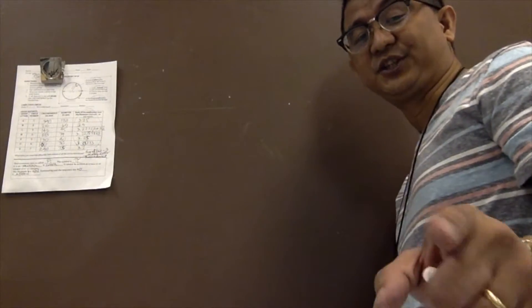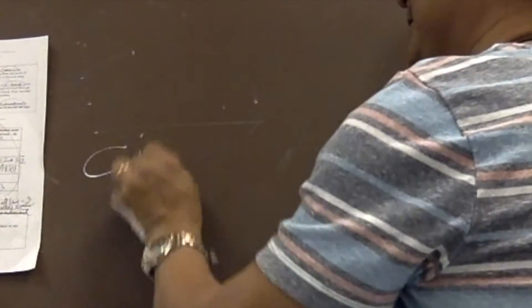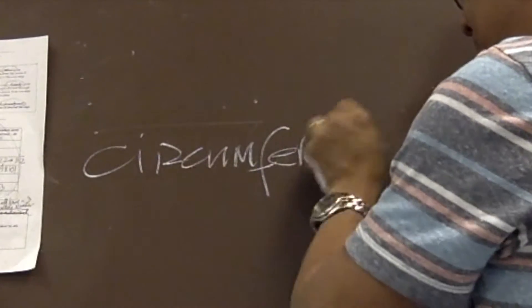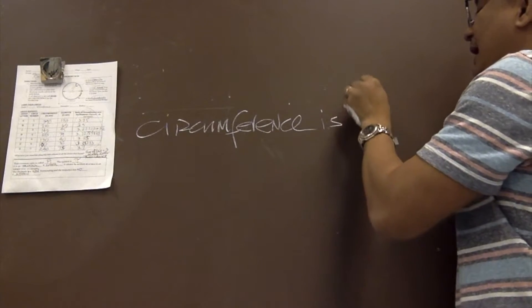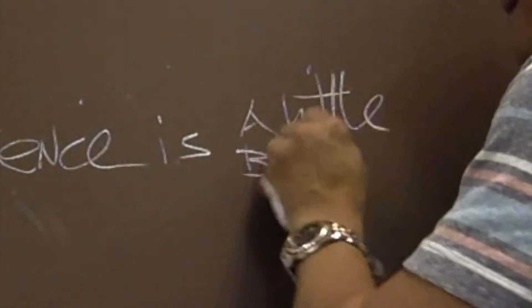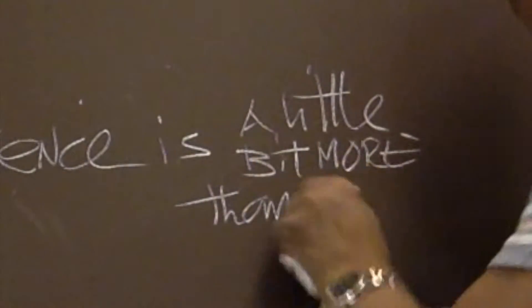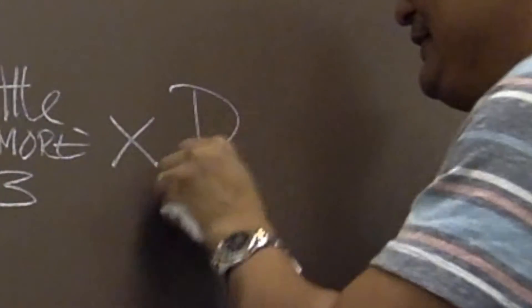Based on that observation about the table, the students said the circumference is a little bit more than three, more than three times the diameter.